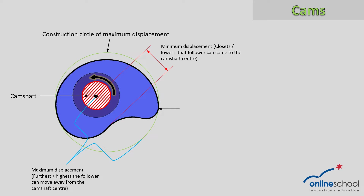On this display, we see the minimum displacement of the follower measured from the center of the cam shaft to the closest part of the profile in this particular example. We also see the maximum displacement of the follower on the green construction circle, which we have constructed to indicate the maximum reach of the follower away from the cam shaft.